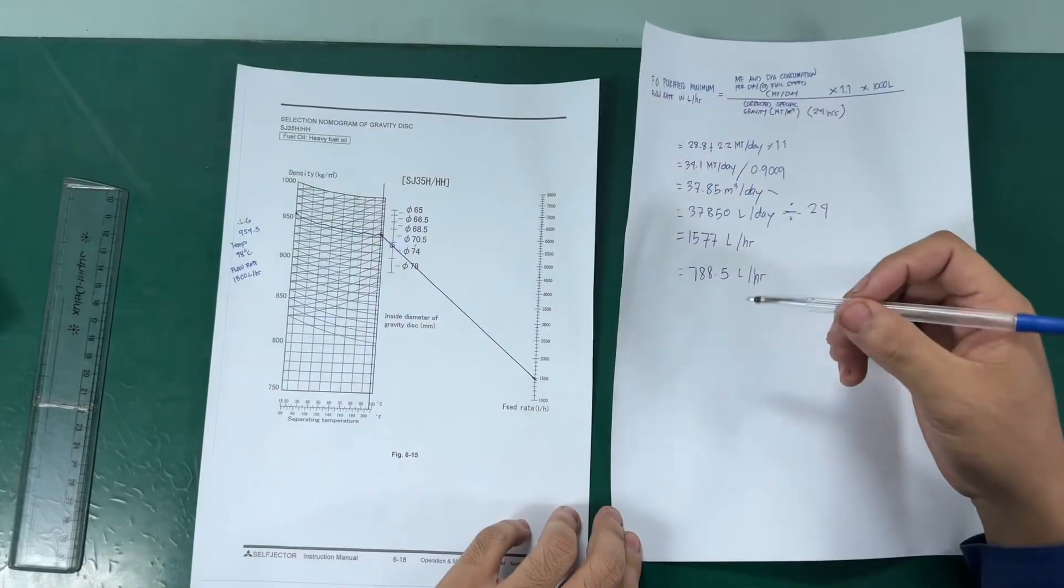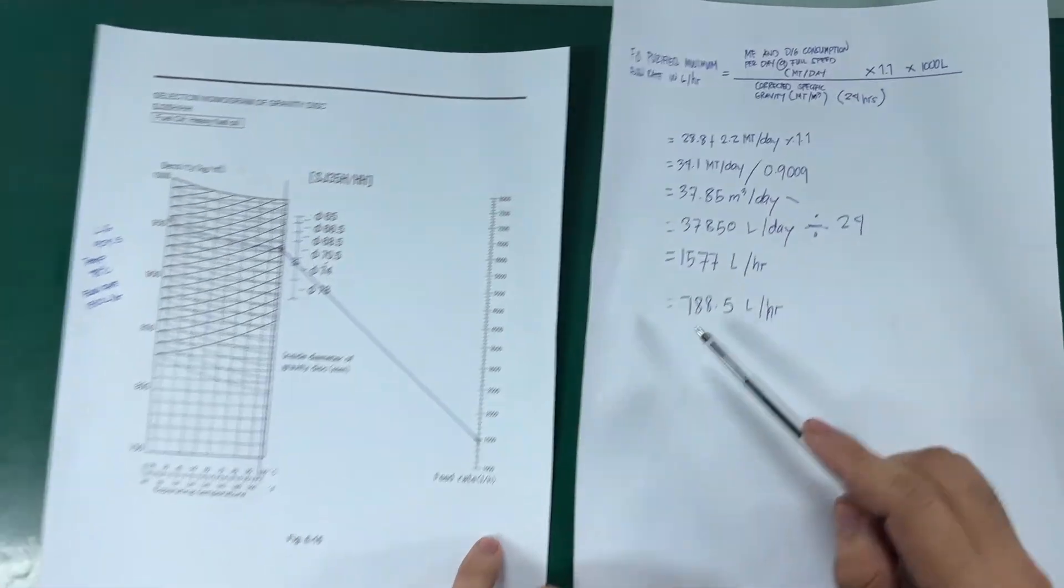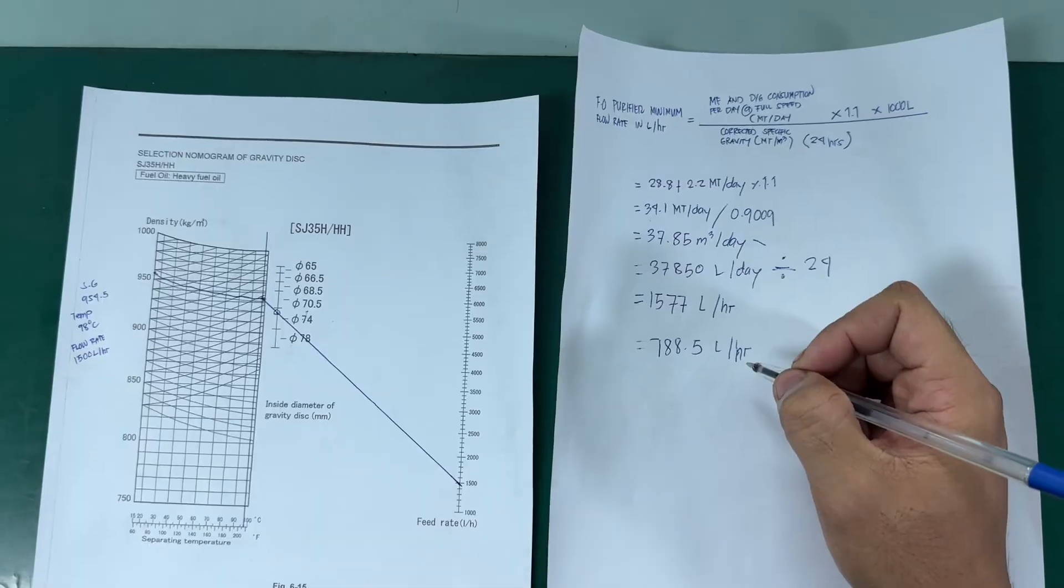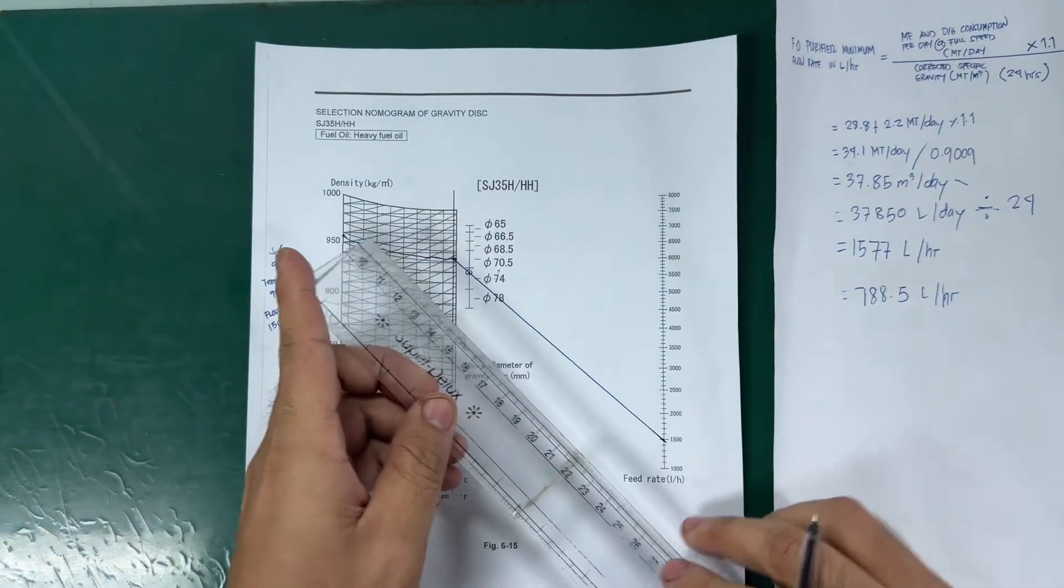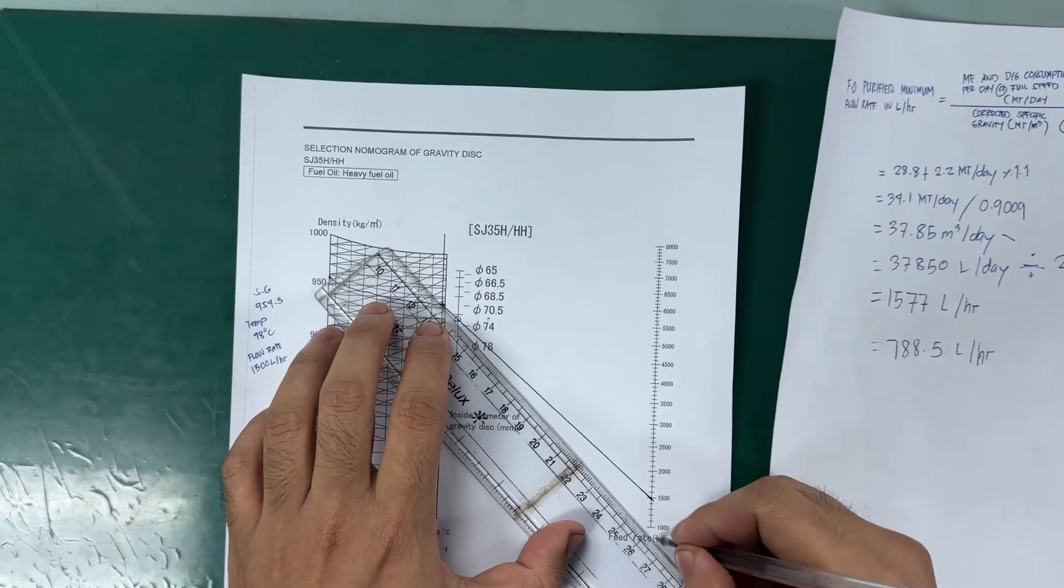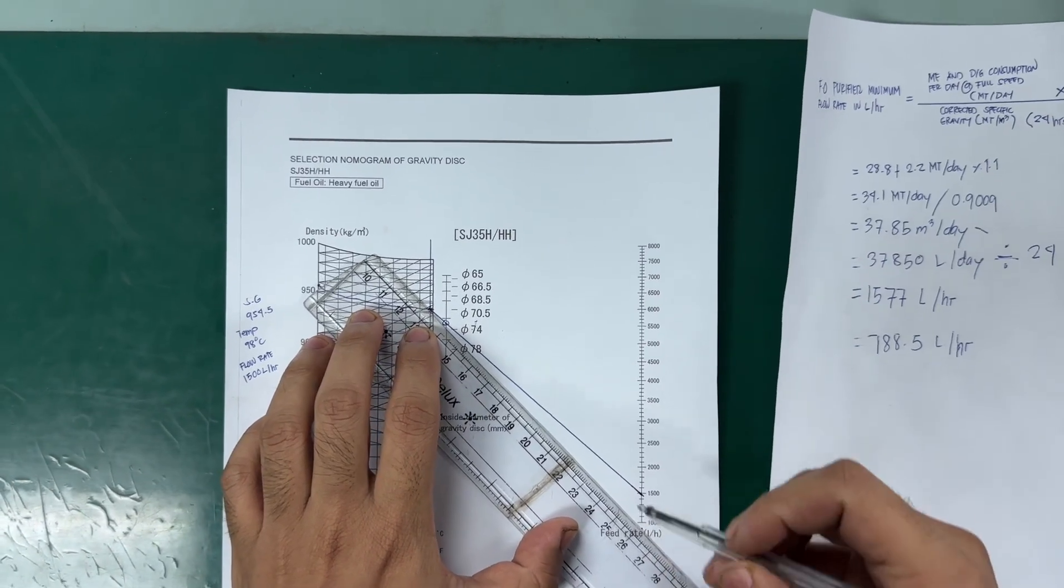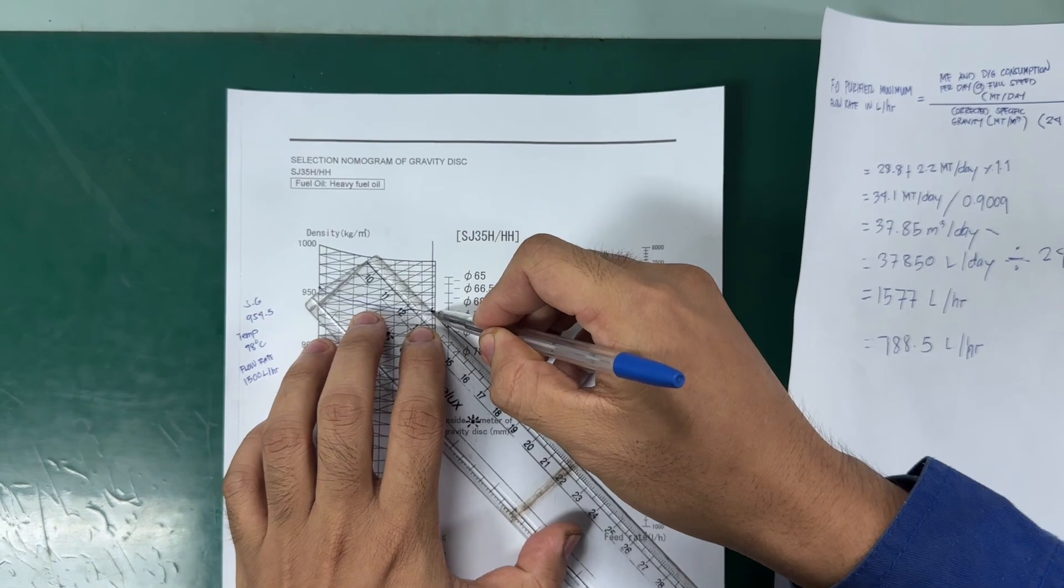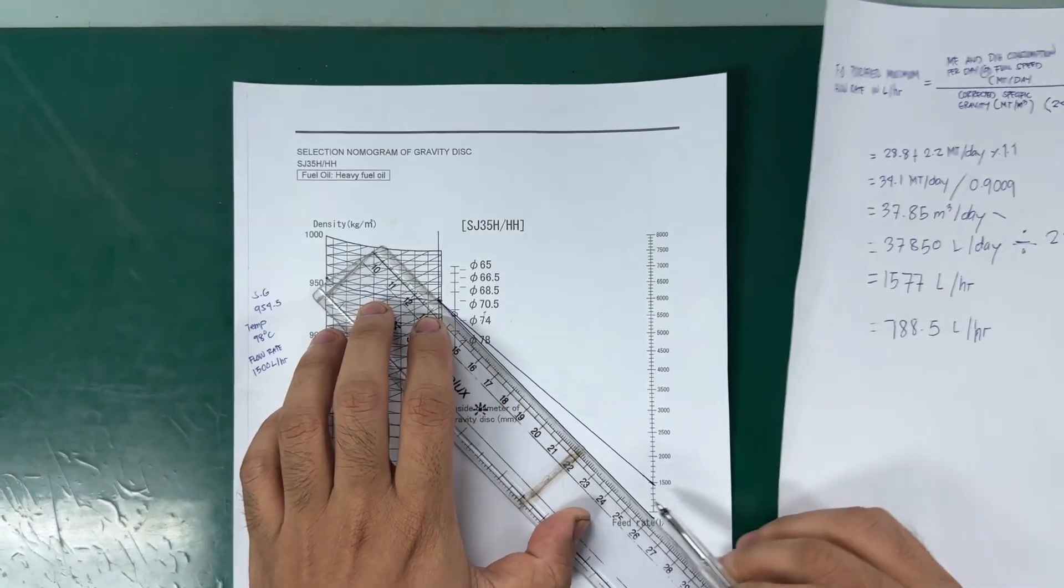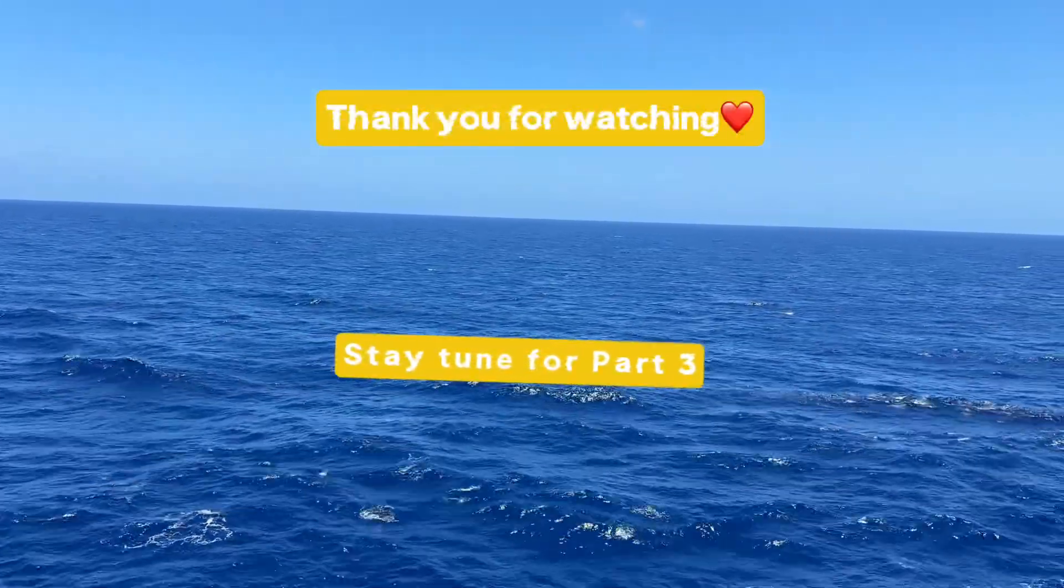Our two purifiers are running in parallel. Our minimum feed rate is 788, approximately 800 liters per hour. So, we will draw. Imagine here, imaginary 800. We will draw a line. Here. Same, same as the first one.